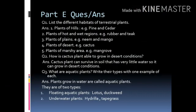List the different habitats of terrestrial plants. Answer: plants of hills, for example pine and cedar; plants of hot and wet regions, for example rubber and teak; plants of plains, for example neem and mango; plants of desert, for example cactus; plants of marshy area, for example mangrove. Then leave one line blank.